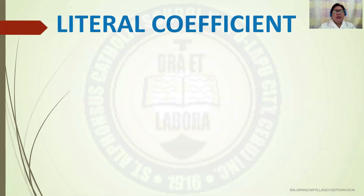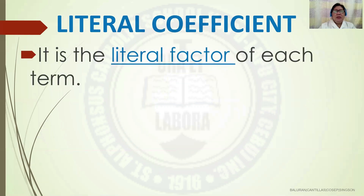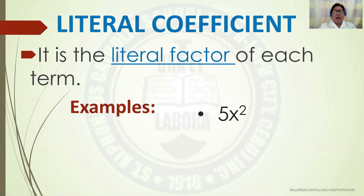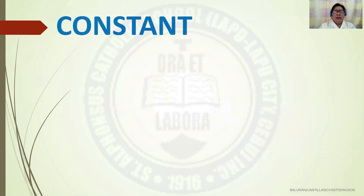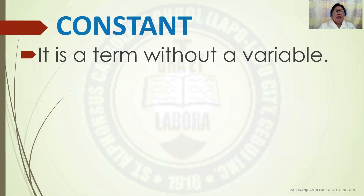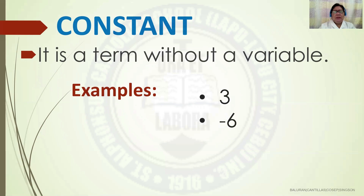What is a literal coefficient? It is the literal factor of each term. For example, in 5x squared, x squared is the literal coefficient. In negative 2x, x is the literal coefficient. In 9x squared y, x squared y is the literal coefficient. What is a constant? It is a term without a variable. Examples: 3, negative 6, 5, and 32.